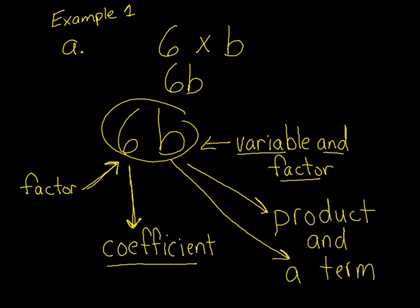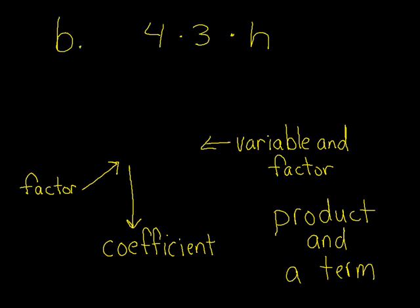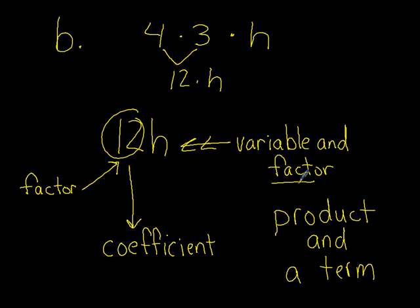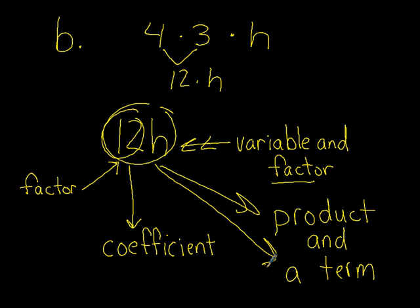On to the second example, example B. We have 4 times 3 times H. So we're going to group these two together. We end up with 12 times H, and ultimately we can have 12H. So the same thing here. Our 12 is our coefficient and the factor. The H is our variable and factor. The whole thing, 12H, is a product and a term.